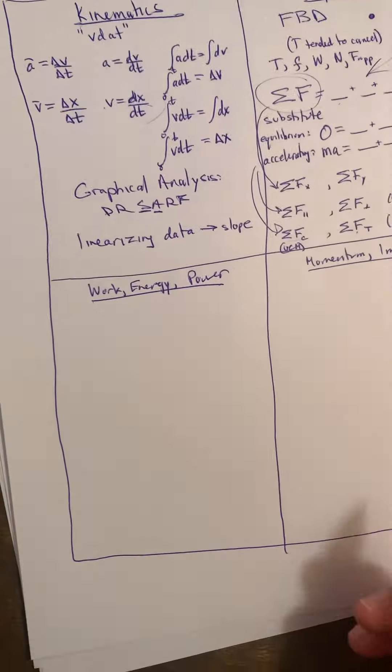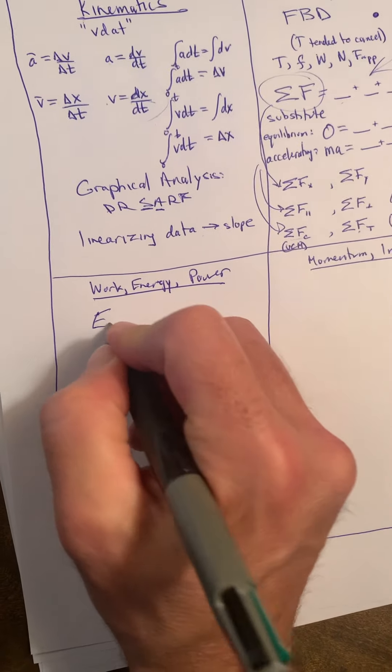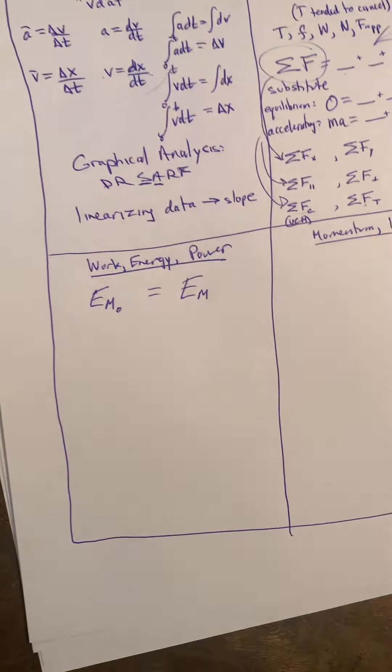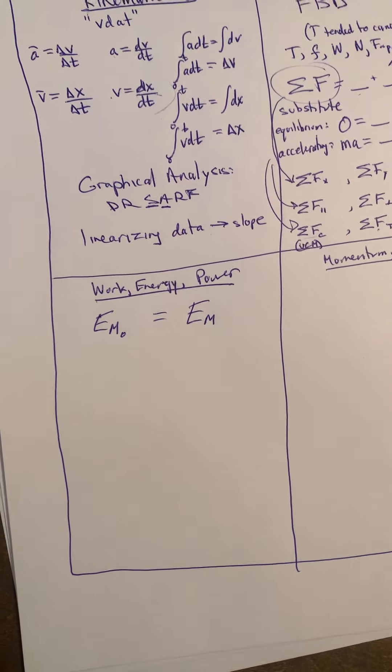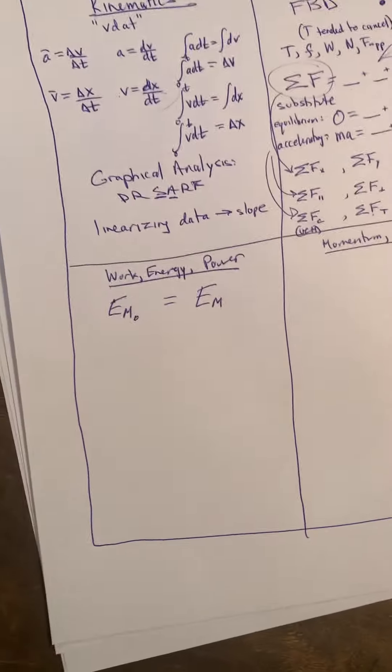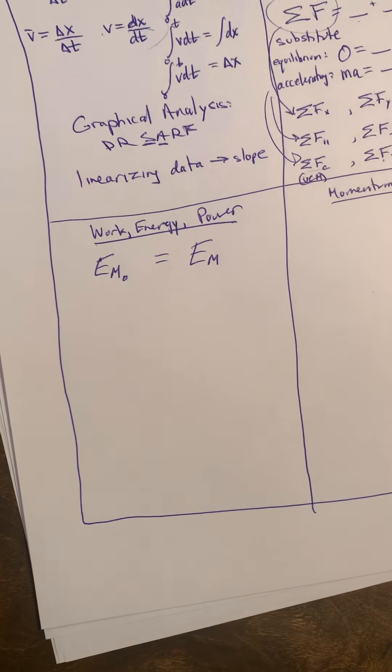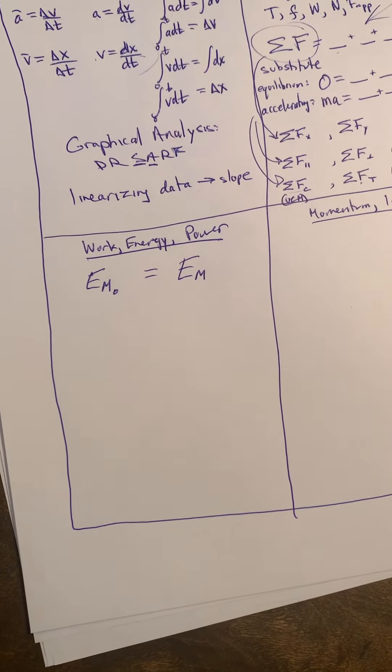Work energy power. Probably the simplest thing was the conservation of mechanical energy. Often our scenarios are frictionless for part of the problem, and so when that was the case, we did our potentials plus our kinetics initially equaled our potentials plus our kinetics finally.